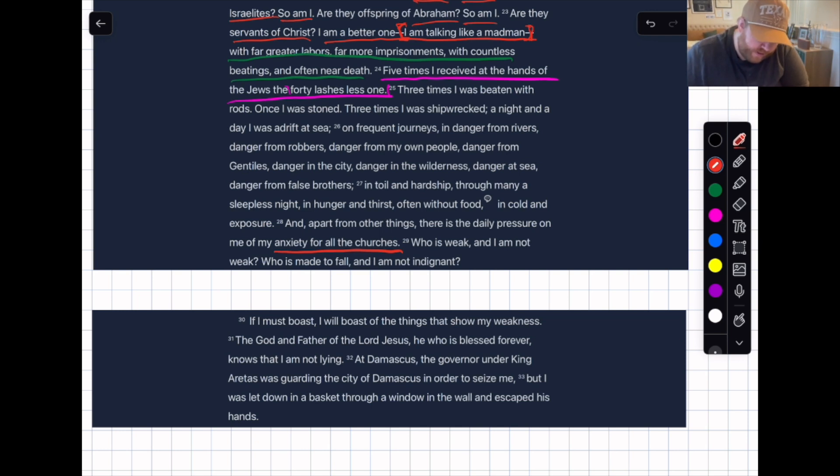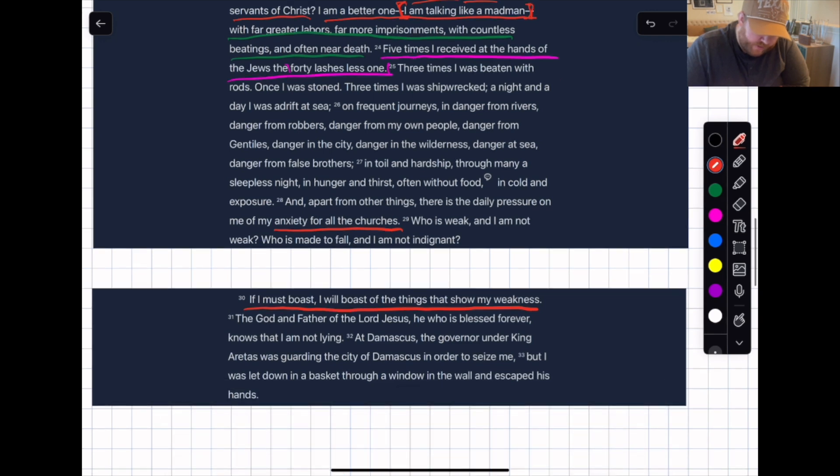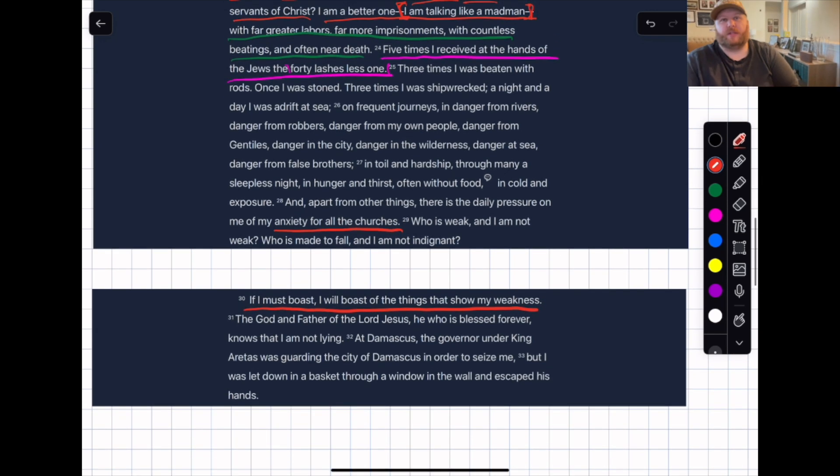Who is weak and am I not weak? Who is made to fall and am I not indignant? If I must boast—this goes back to last chapter—I will boast in the Lord. If I must boast, I will boast of the things that show my weakness. The God and Father of the Lord Jesus, he who is blessed forever, knows that I am not lying. At Damascus the governor under King Aretas was guarding the city of Damascus in order to seize me, but I was let down in a basket through a window in the wall and escaped his hands.